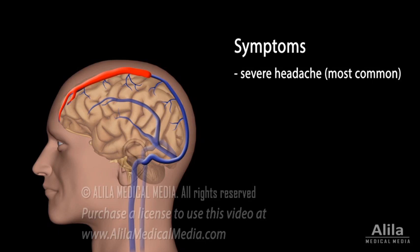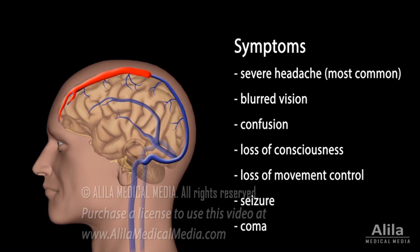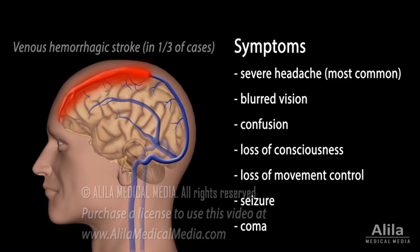The increased pressure may damage the surrounding brain tissue, producing stroke symptoms such as blurred vision, confusion, loss of consciousness, loss of movement control, seizure, or coma. The engorged blood vessel may also rupture, bleeding into the brain, a condition known as venous hemorrhagic stroke.